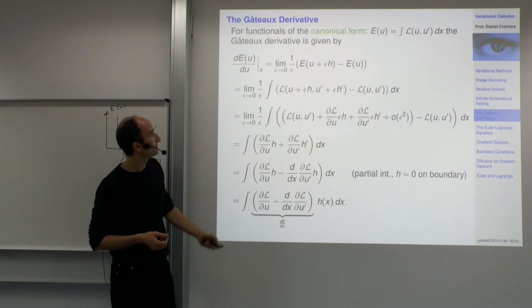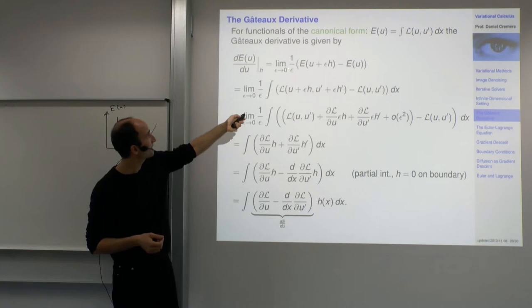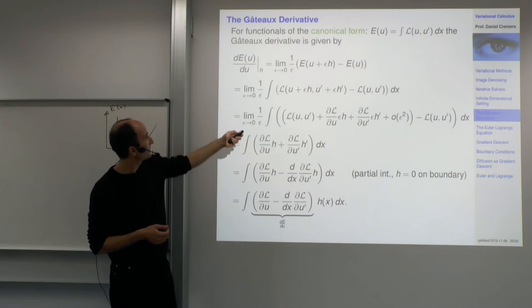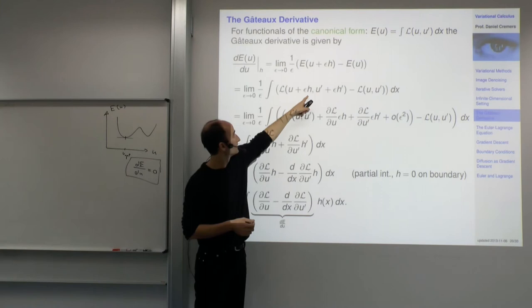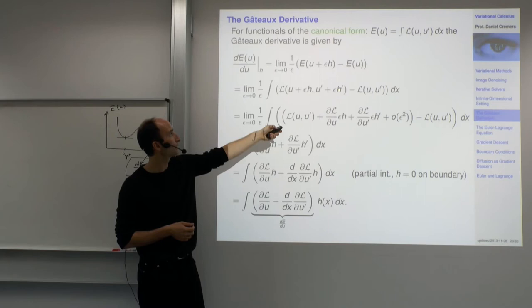Let's consider the case of u and u prime. If we plug that into the definition of the directional derivative, we get two terms: L at the perturbed location — u plus epsilon h, and u prime plus epsilon h prime — minus L at the original location.